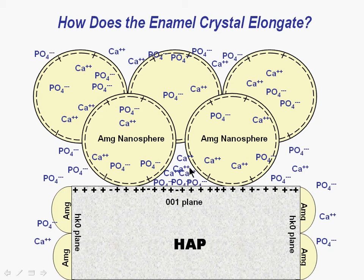The movement of calcium and phosphate ions will form a supersaturated local environment. The supersaturated condition induces crystal growth.